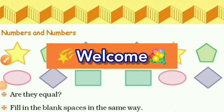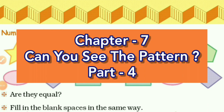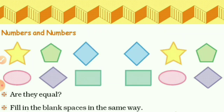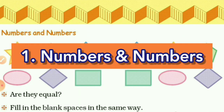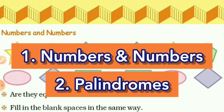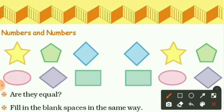Hello dear students and welcome to this online class video. This is the fourth part of the seventh chapter of Class 5 subject Mathematics. I am Jay Prakash. Let's start the class. Today I have taken two very important topics: first is Numbers and Numbers, and second is Palindromes.